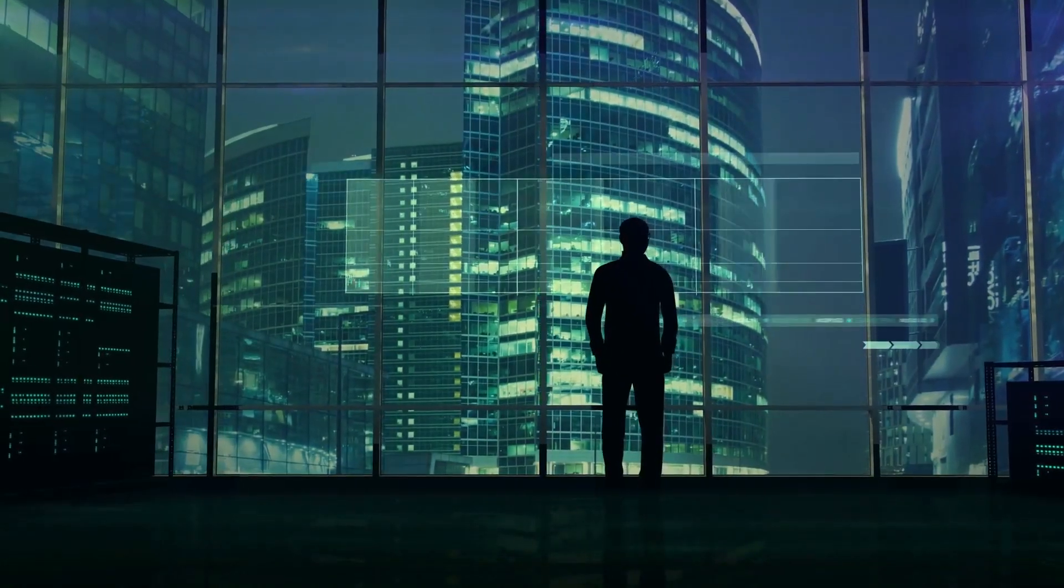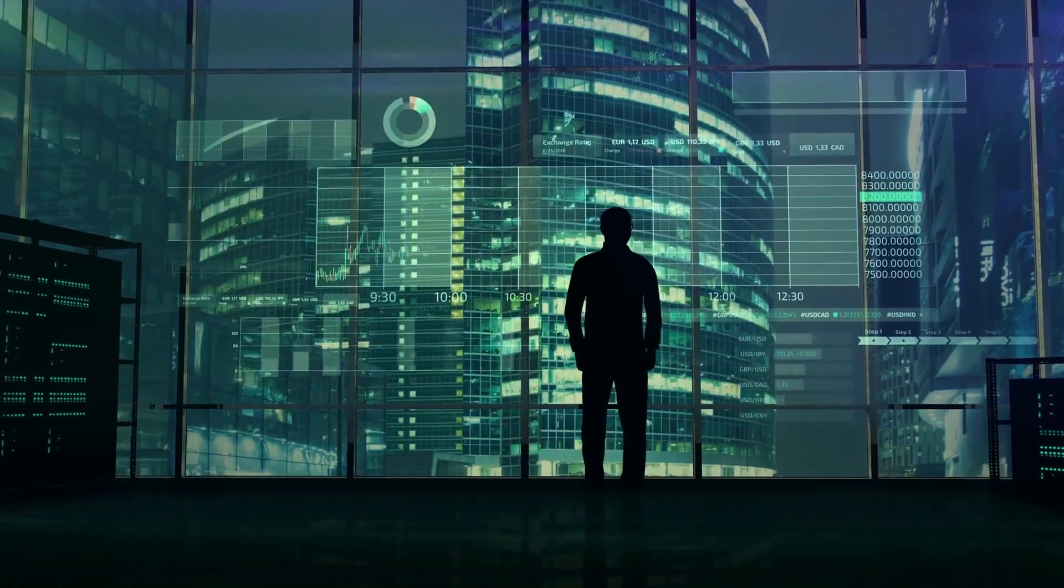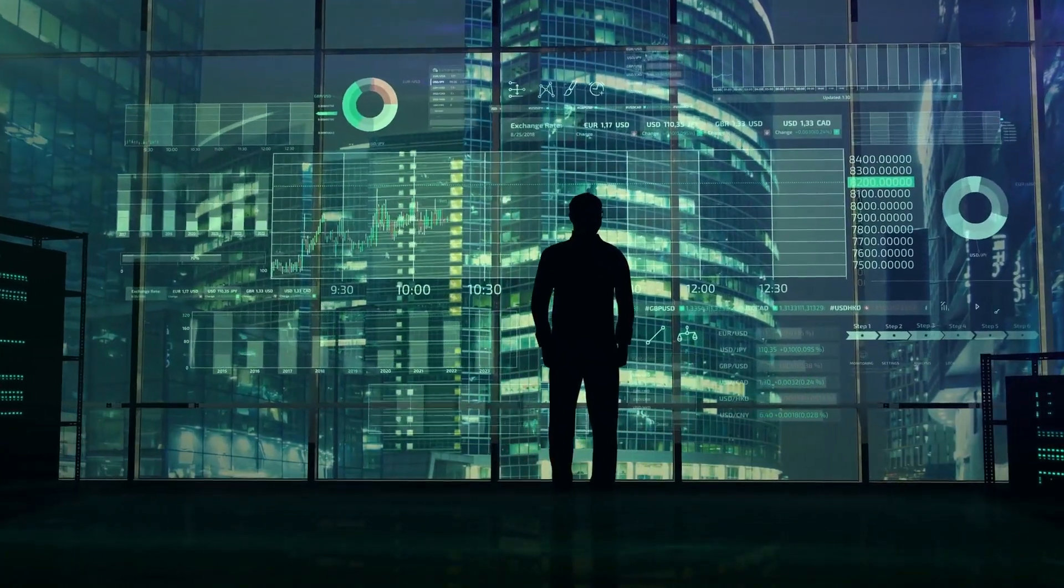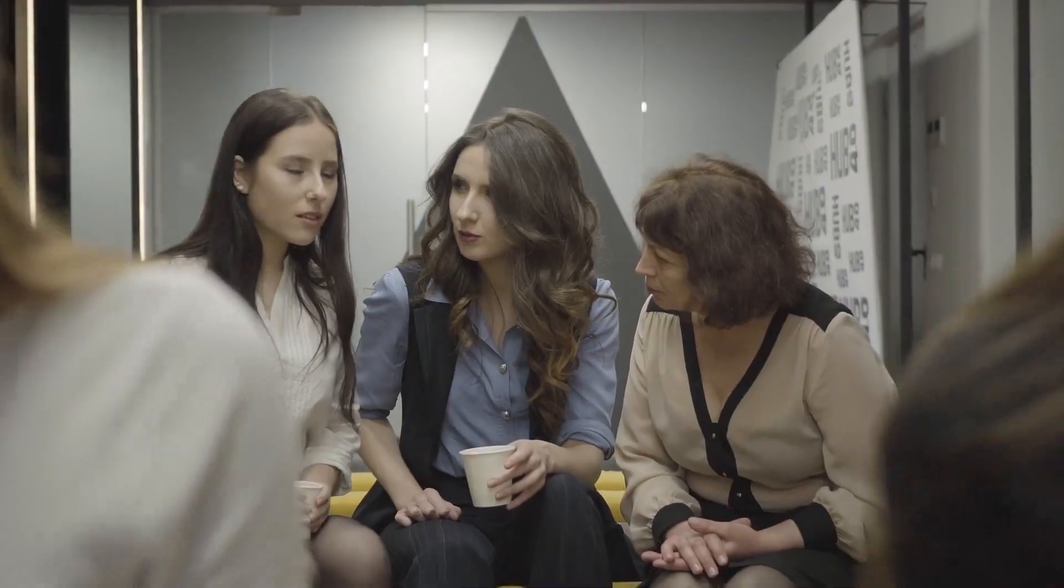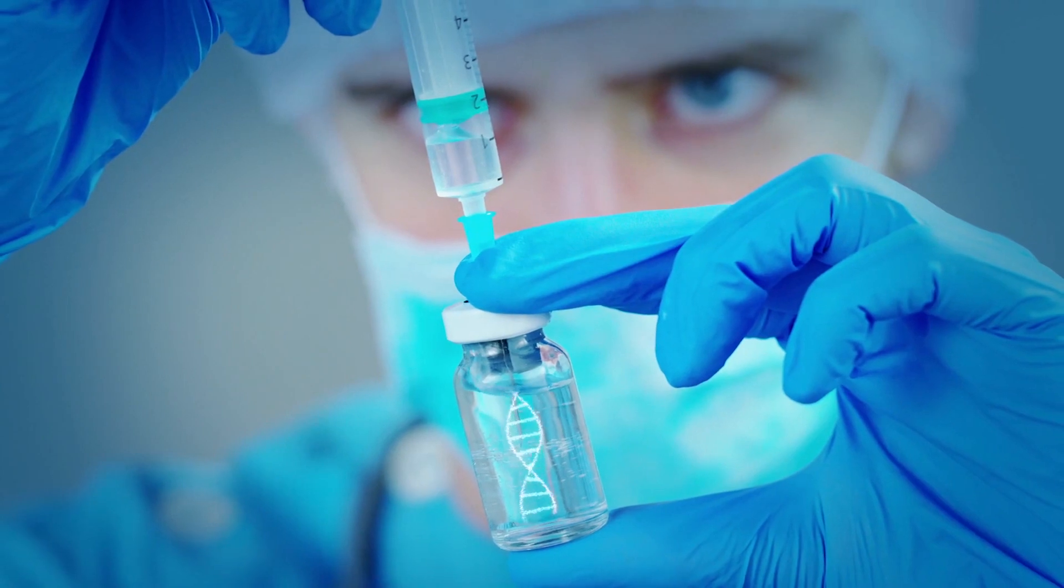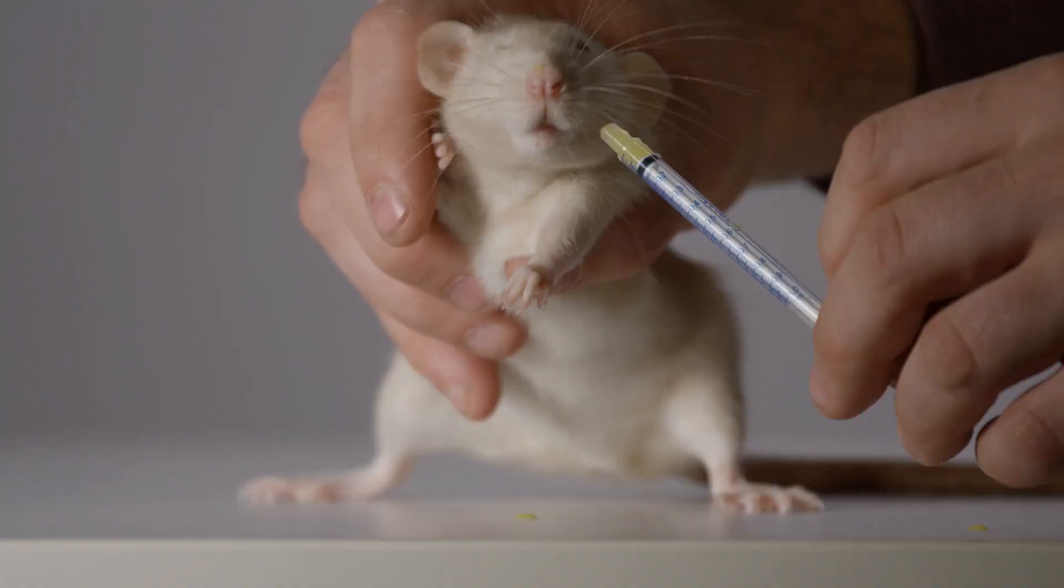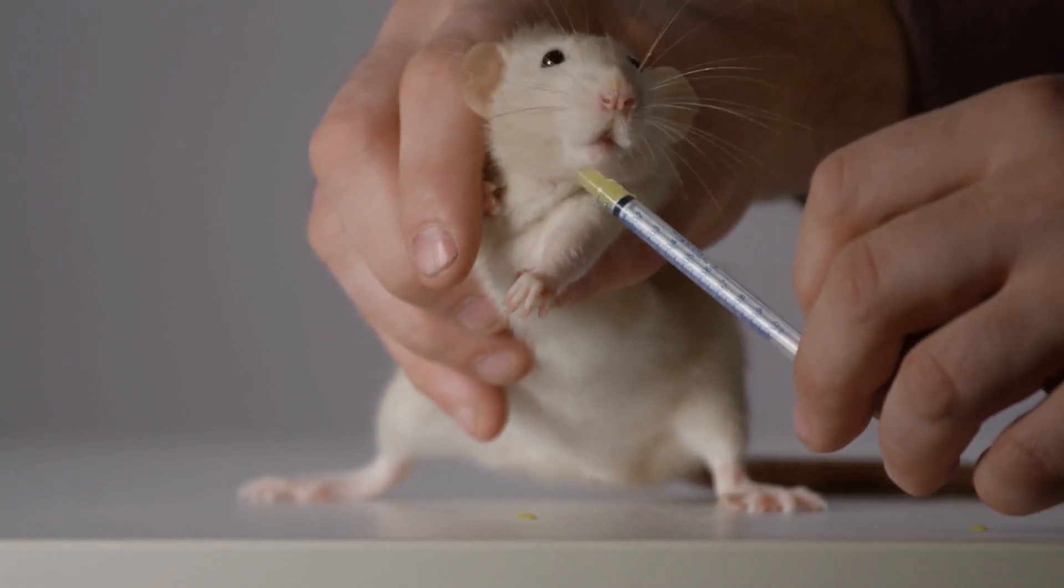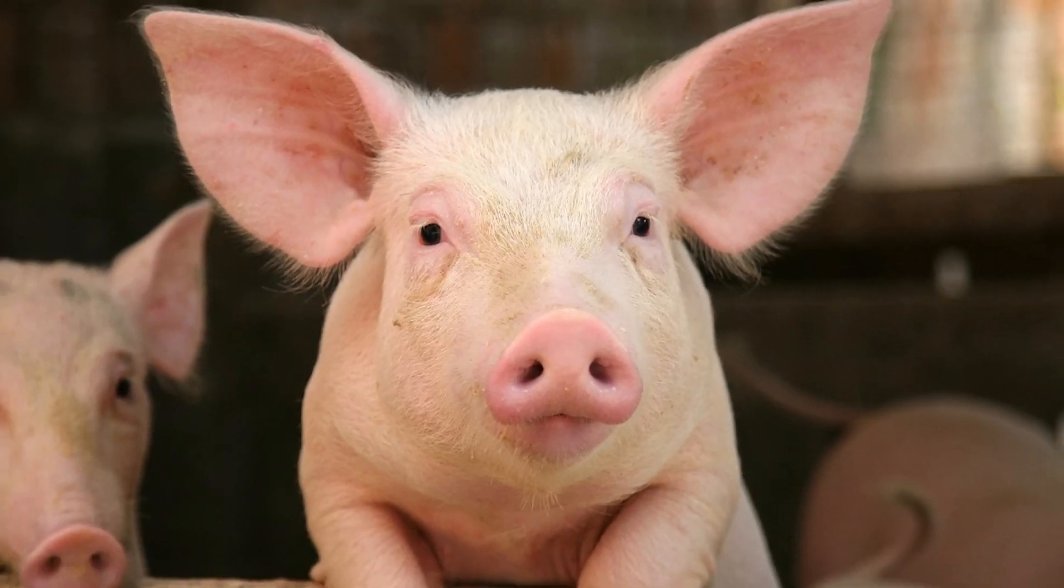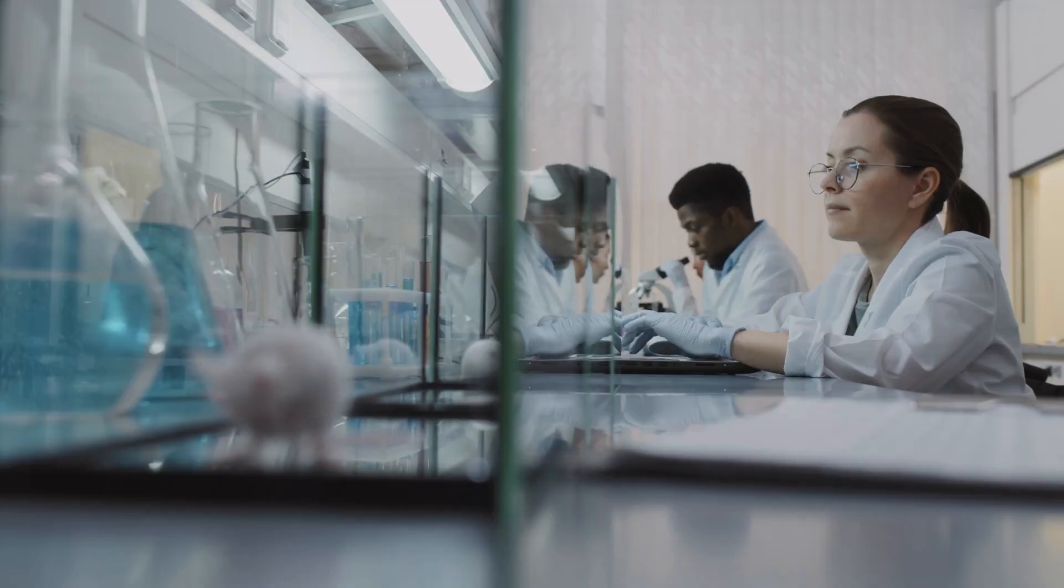Neuralink is not without criticism, despite all these intriguing claims. But again, what else would you anticipate from a business led by Elon Musk? Most recently, an alleged inquiry into their procedures for using animals for research put them in the news. It's been claimed that over 1,500 animals, including pigs, sheep, and monkeys, were killed during testing.